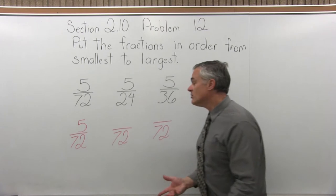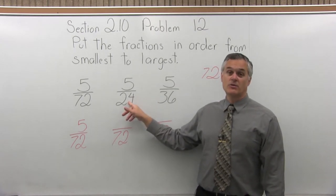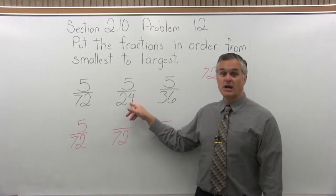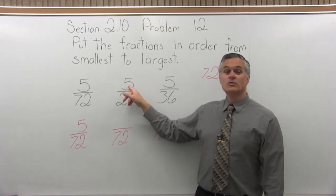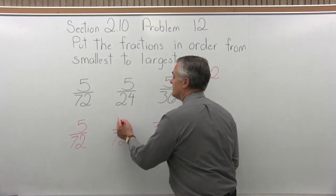Now the other two are a little more work, but not bad. So for 5 over 24, I started with a denominator of 24. It turned into a 72. That must be because it was multiplied times 3. 24 times 3 is 72. So the numerator would also be multiplied times 3. 5 times 3. 5 times 3 is 15.